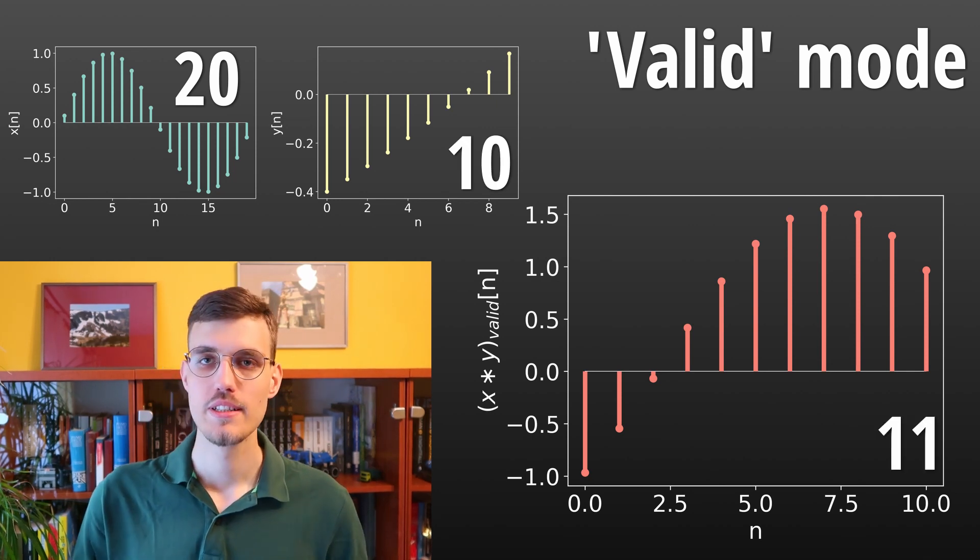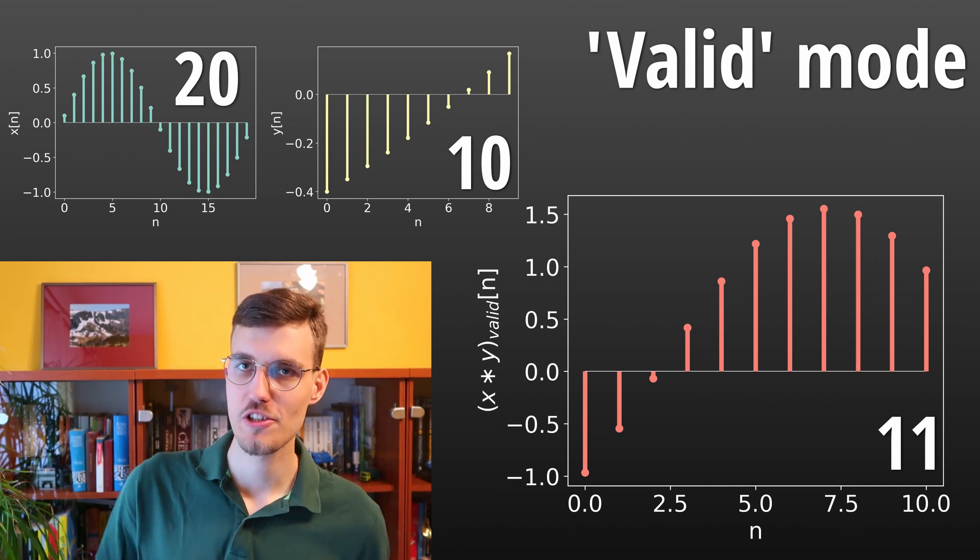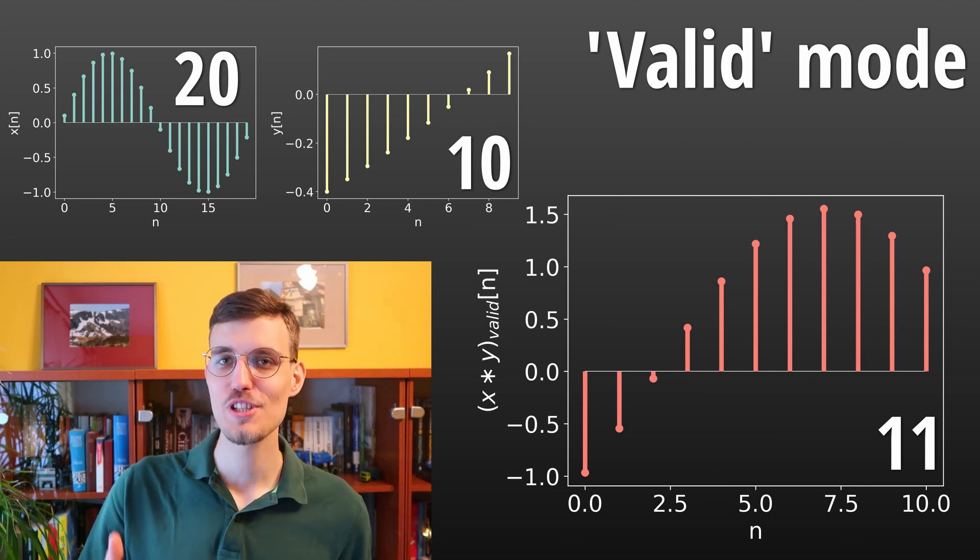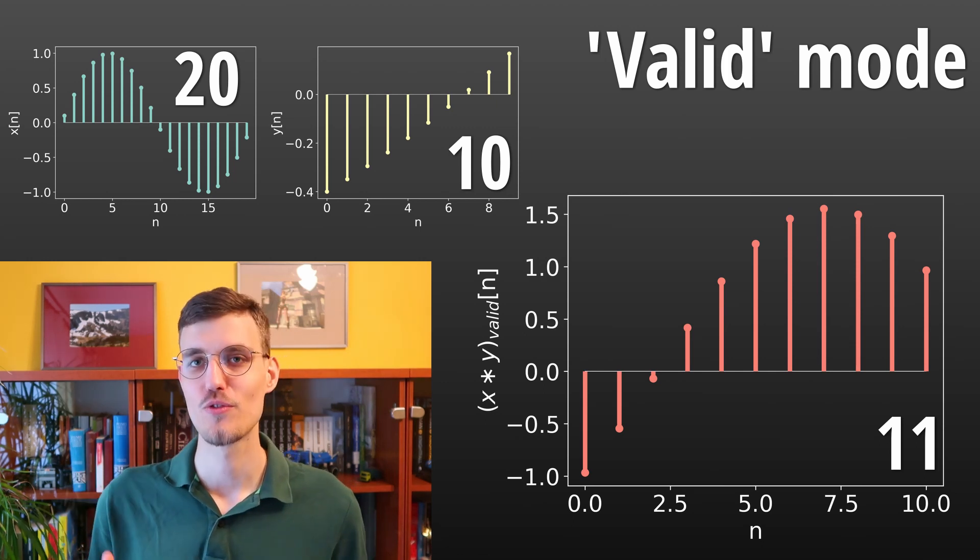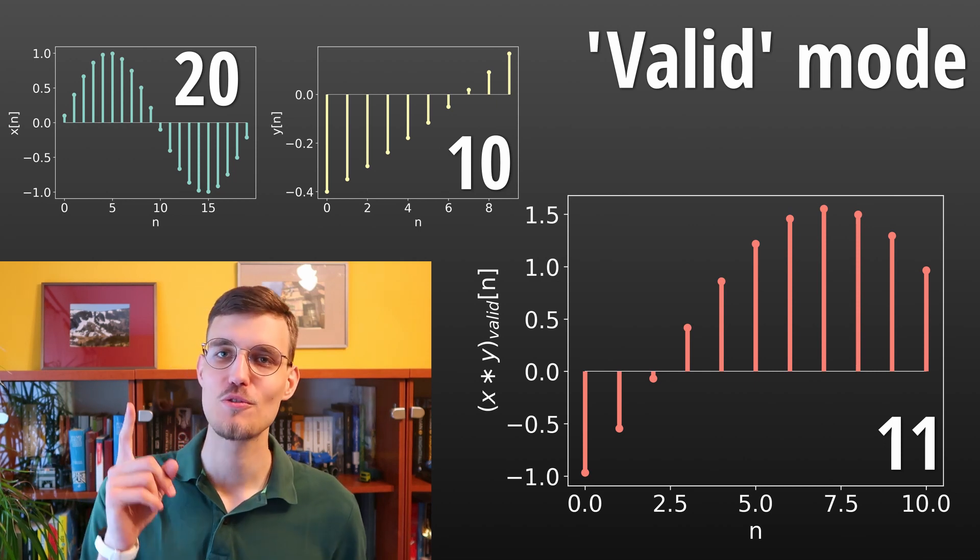As you may observe, the length of the output shrinks with each application of the convolution in the valid mode, which means that after sufficiently many applications of convolution in the valid mode, we will be left with just one sample.